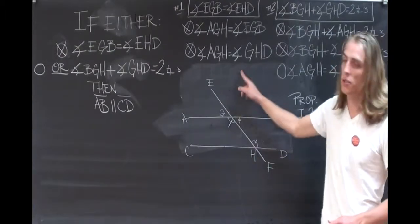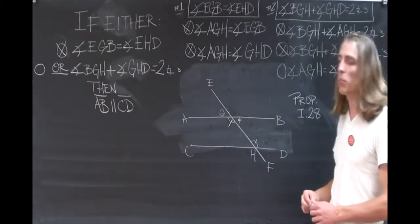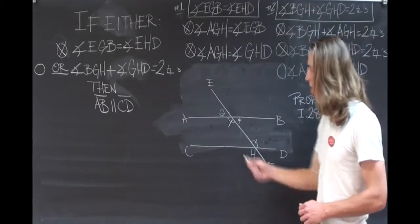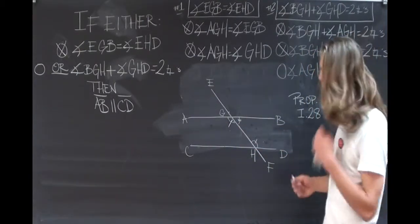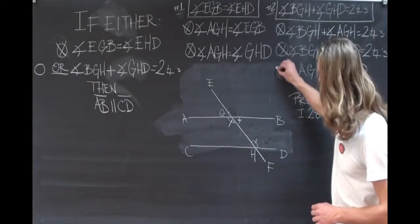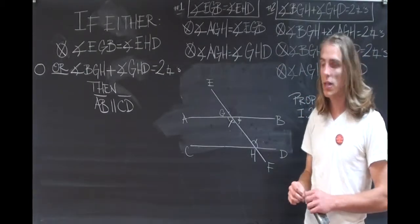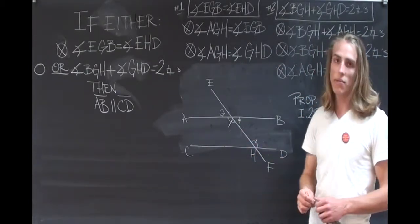Then we return to the last step of the first case, and remember Proposition 27, which says that if the alternate interior angles are equal, the lines will be parallel. We see that we have alternate interior angles being equal. Therefore, AB and CD have been proved parallel.